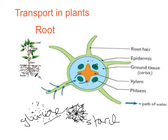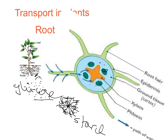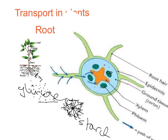Let's move on from the root and look at the stem. We've got the xylem as an X shape — that will remind you constantly that it's xylem in the middle. And the phloem is in the bundles around there.